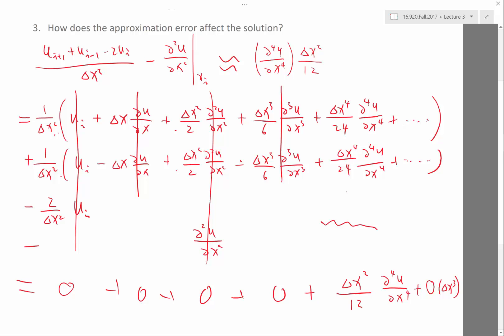So if, for example, we have a scheme whose approximation error is just order delta x, which is actually sufficient for you to get a pretty good solution in 1D, right? In 1D, you can make delta x very small. The computer still runs.